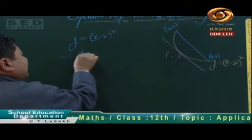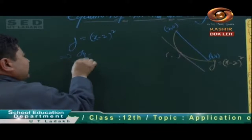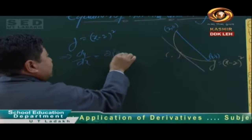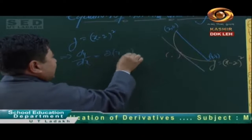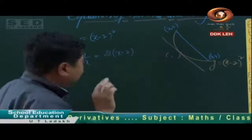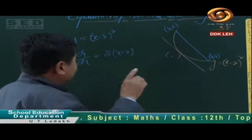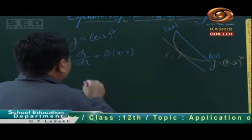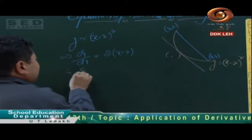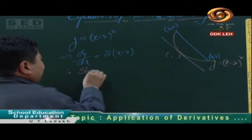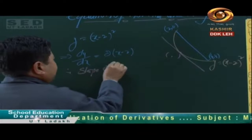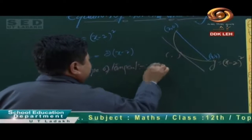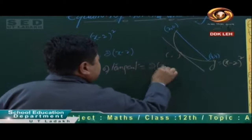Differentiating, dy/dx is equal to 2(x minus 2). Therefore, slope of tangent is equal to 2(x minus 2).